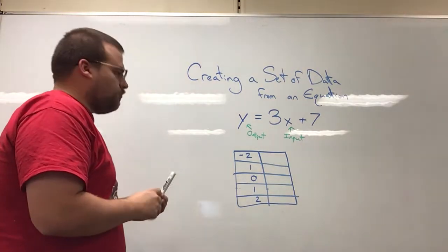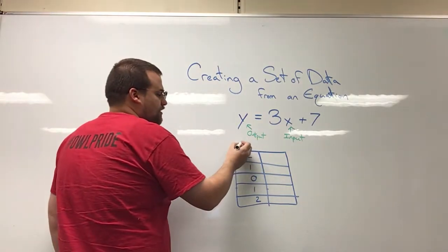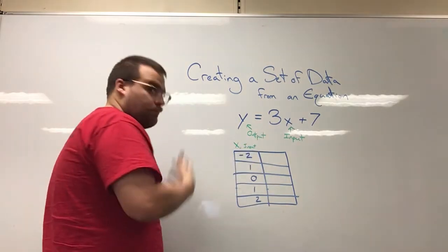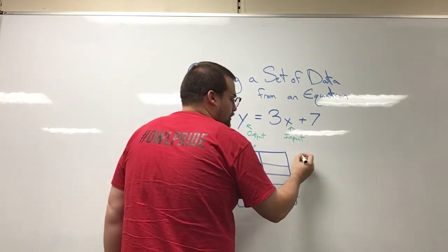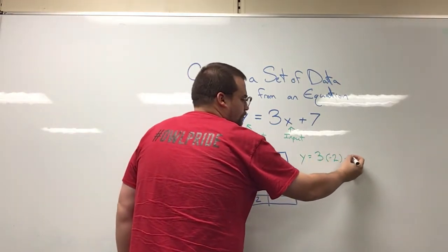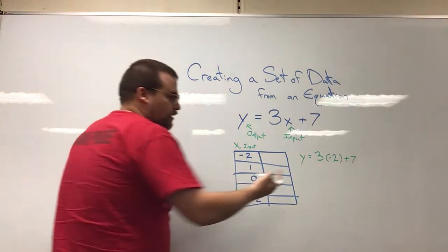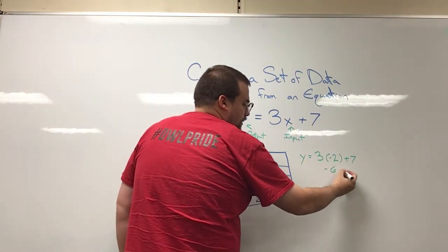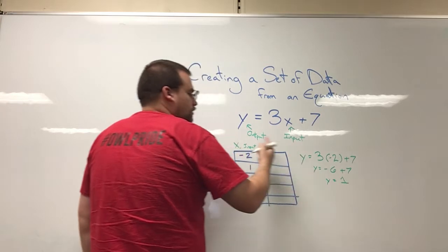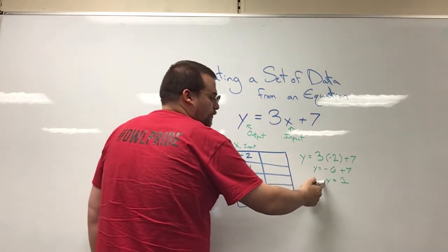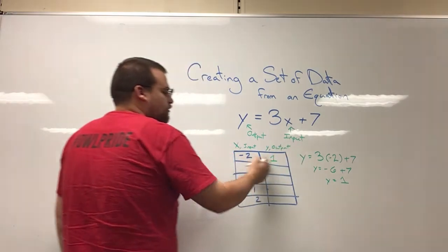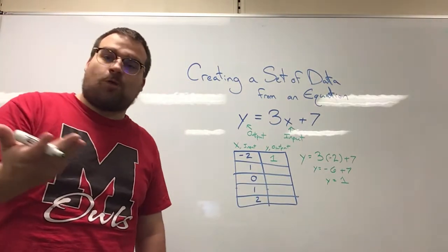Here's how it works. We take this equation and these are our inputs, our x values, so let's put them in. 3 times x plus 7 — if I wanted to try out negative 2, I would write that in place of x: 3 times negative 2 plus 7. Well, 3 times negative 2 is negative 6, and negative 6 plus 7 is 1. So for the input of negative 2, we get an output or y value of 1. That is our first data point: negative 2 input gets us a 1 output.